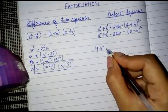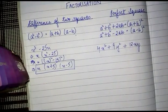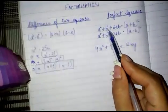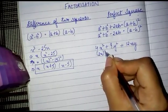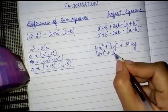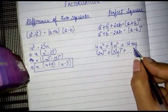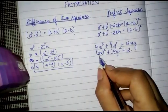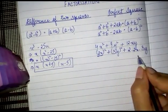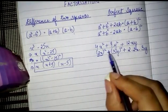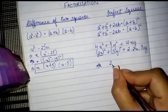Let's see the same with an example. Suppose there is an equation 4x² + 9y² + 12xy. This equation can be written in the form of a² + b² + 2ab. Here, 4x² can be written as (2x)², 9y² can be written as (3y)², and 12xy can be written as 2ab where a is 2x and b is 3y. So this equation is in the form of a perfect square, and we can write it as (a + b)².